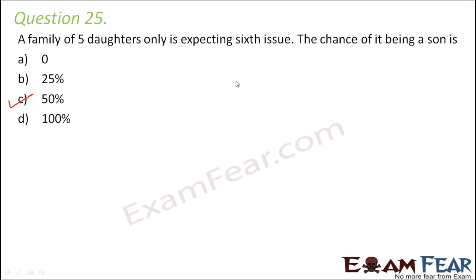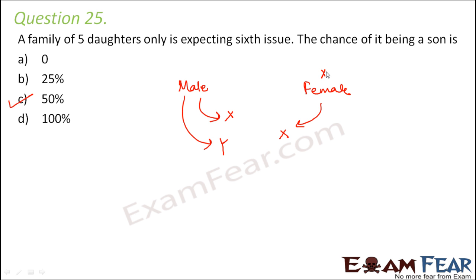What decides whether the child would be a son or a daughter? The male can contribute either its X chromosome or its Y chromosome. The female will always give its X chromosome because the female has XX and the male has XY. If the male gives X, it will make a girl child (XX). If the male gives Y, it forms XY and gives a boy child. So the possibility that a male can give X or Y is 50-50. Every time, the possibility of a child being a son or a daughter is 50%.